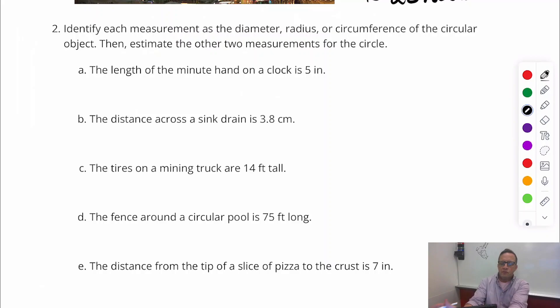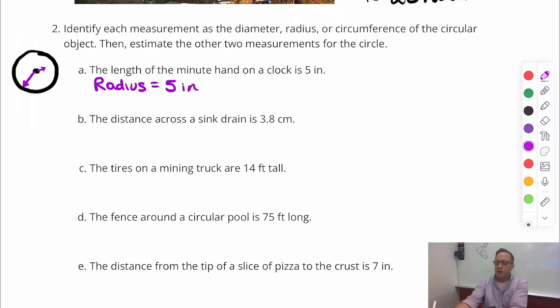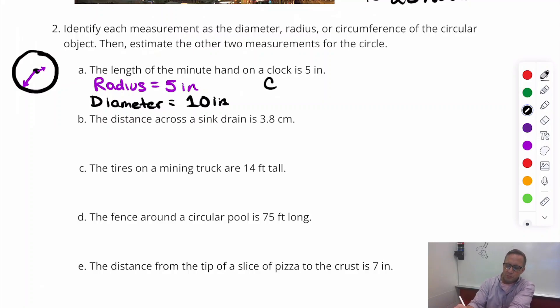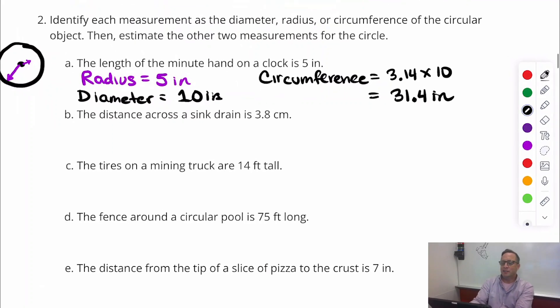So the length of a minute hand on a clock. The minute hand is the longest hand on the clock. That looks like a radius, doesn't it? So that is the radius. So the radius is five inches, which means that the diameter is going to be double that. So if the radius is five, the diameter will be ten inches. And then circumference is going to be 3.14 times ten, which is 31.4 inches.